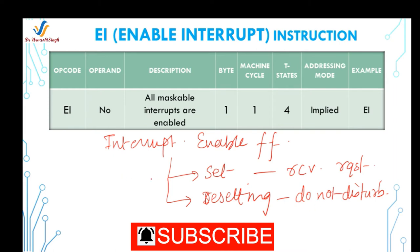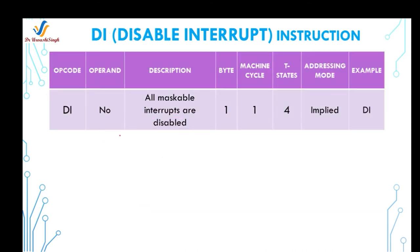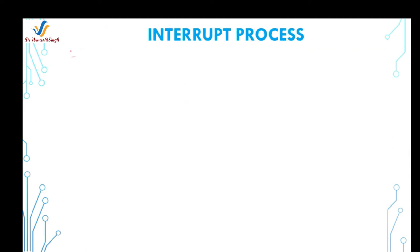This is done with the help of instructions. The EI instruction (Enable Interrupt) is used to enable all the maskable interrupts, and the DI instruction (Disable Interrupt) is used to disable all the maskable interrupts.